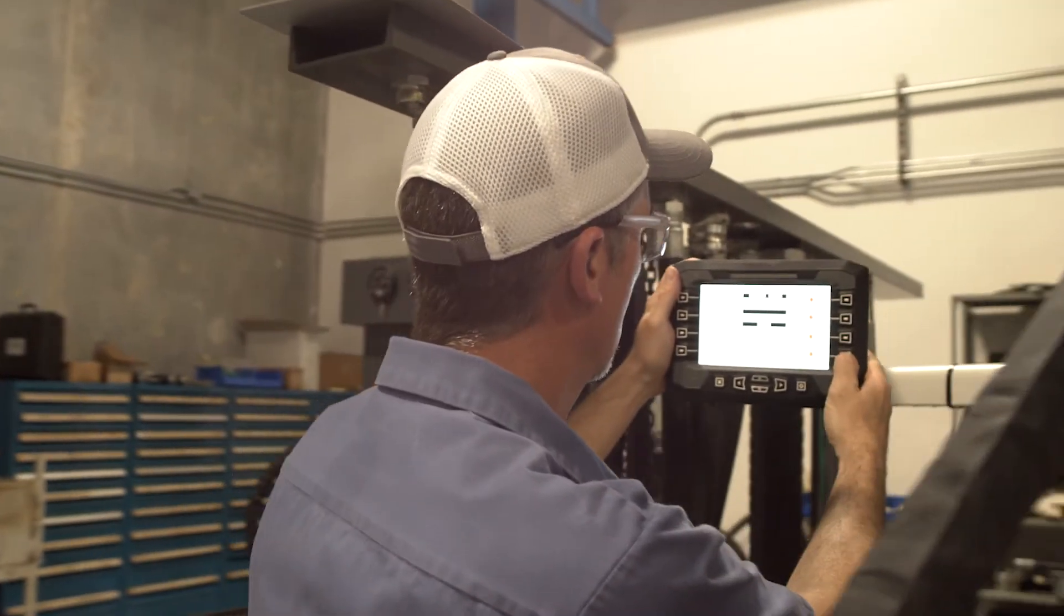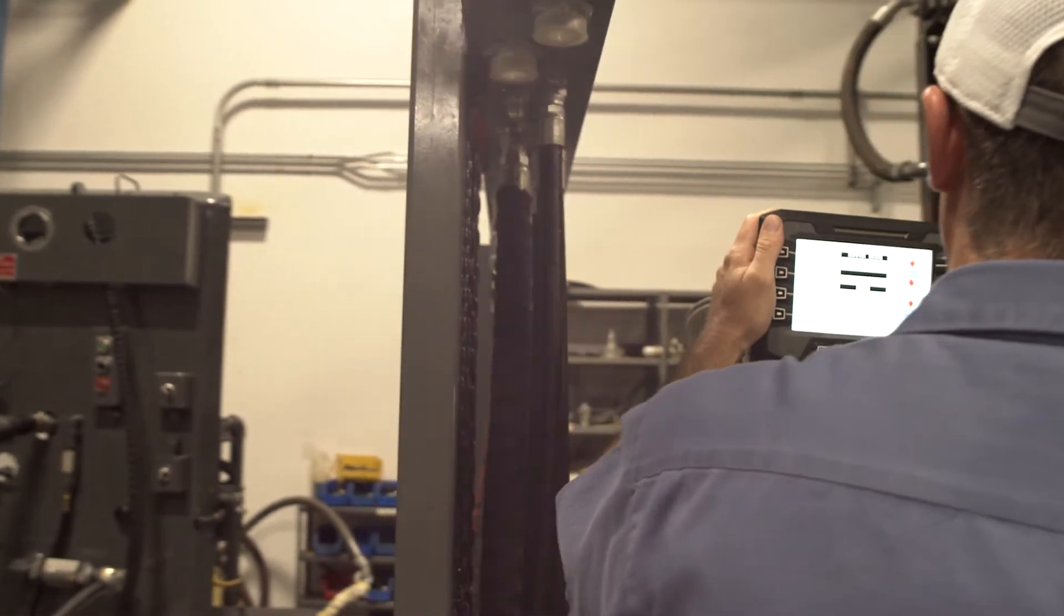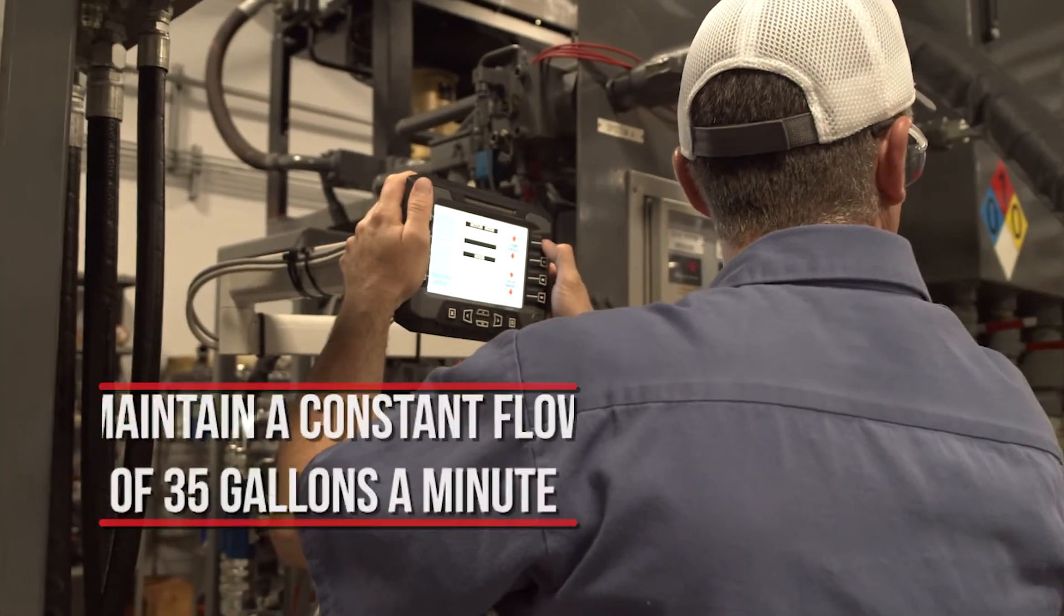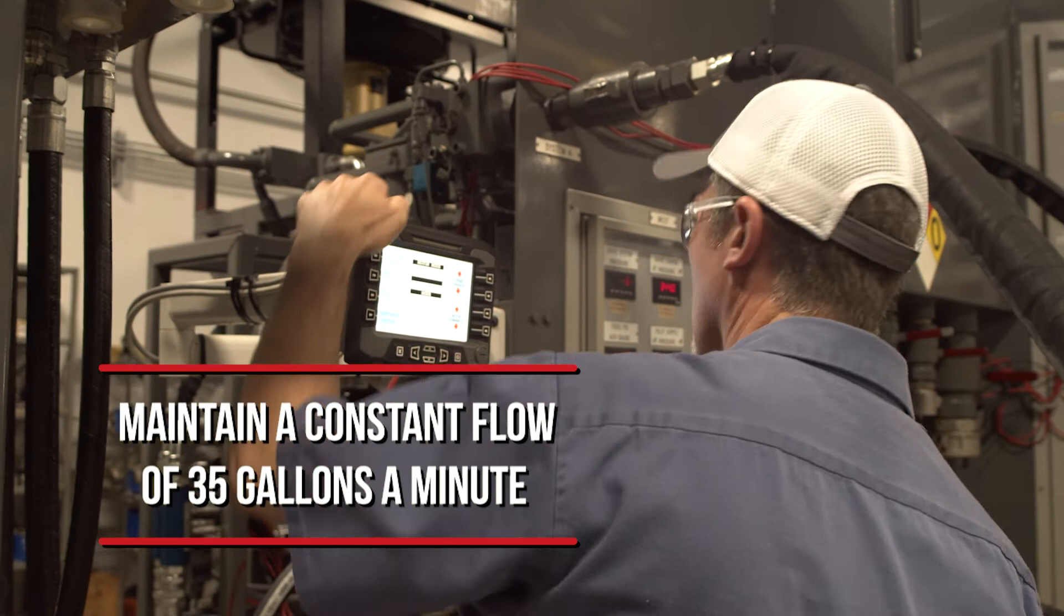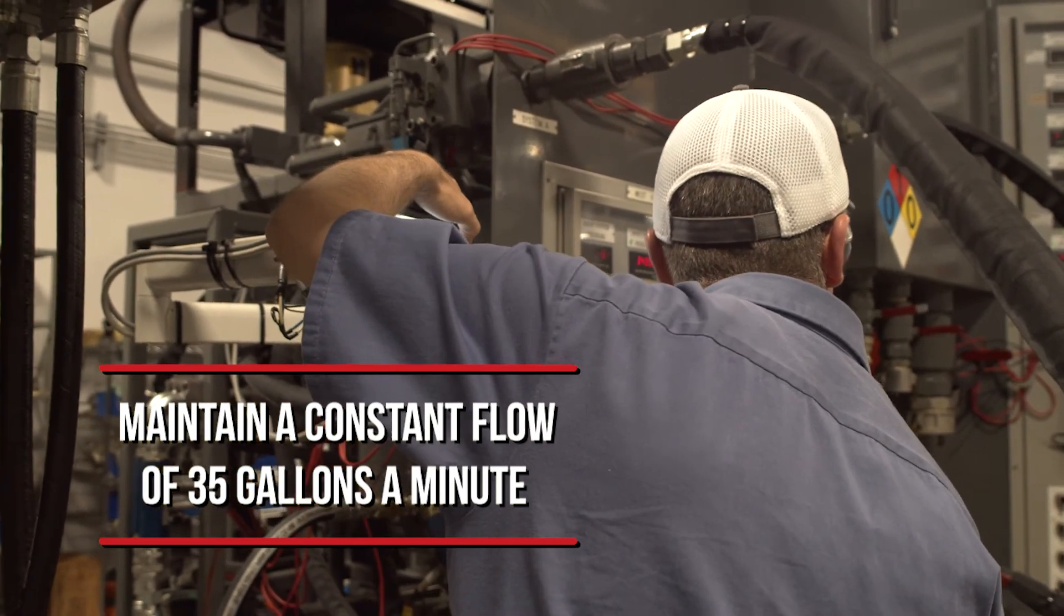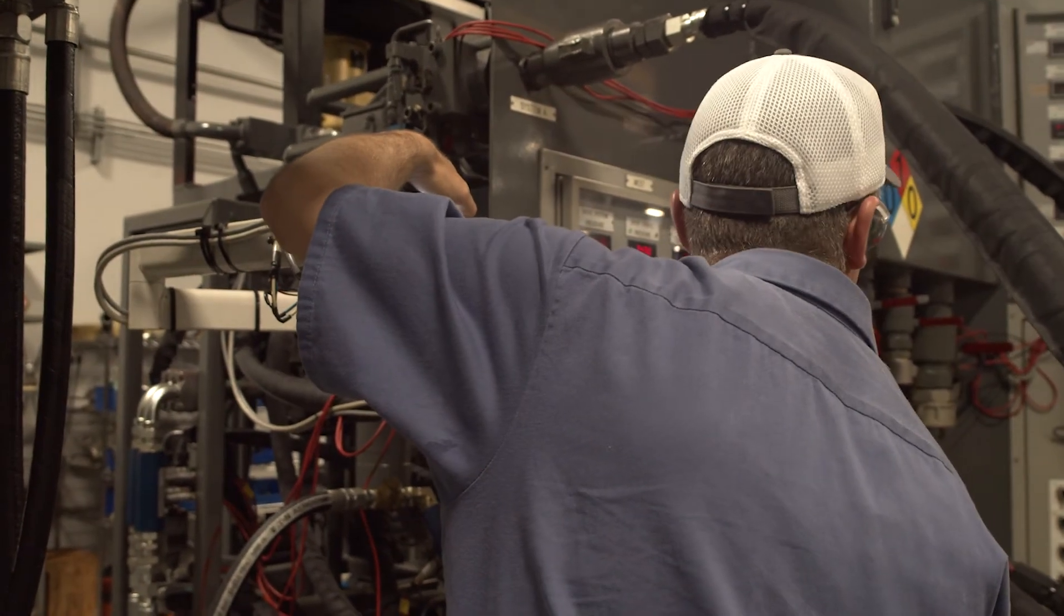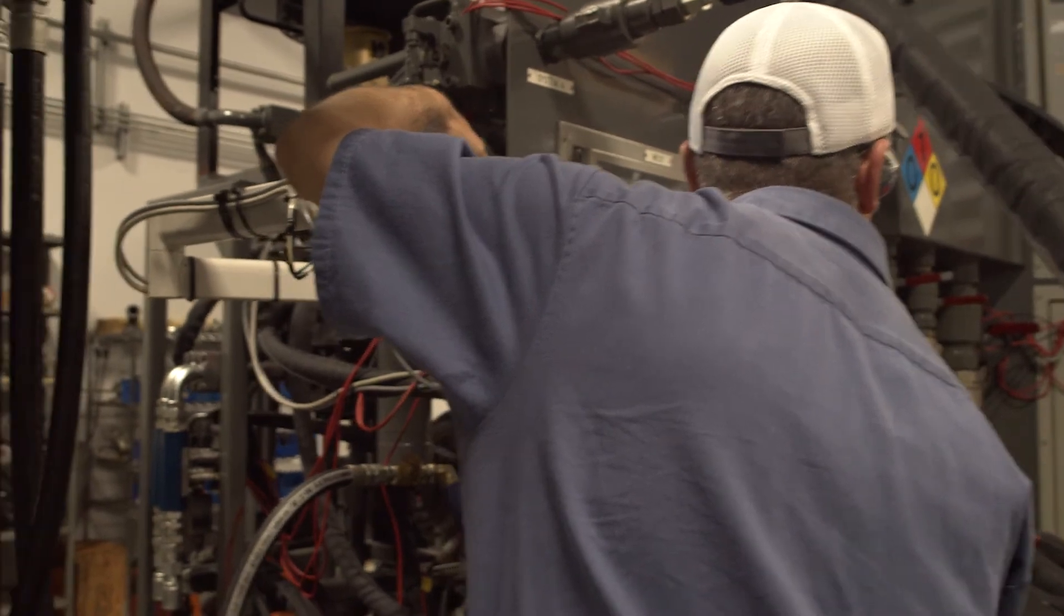We are now going to increase the load on the Danfoss motor, which is step two for our dynamic load test. It is important to note we are maintaining 35 gallons per minute for both step one and two. This is the one constant throughout our dynamic load test.